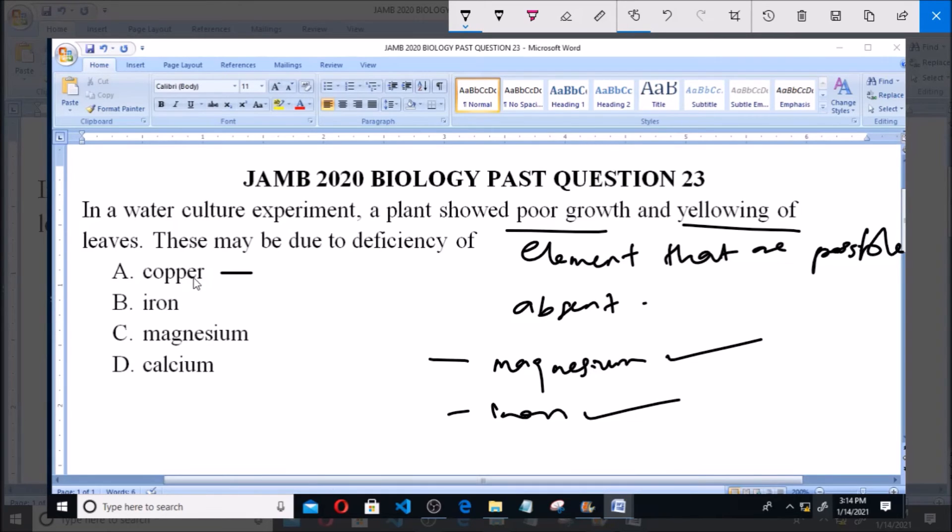But the deficiency of copper and calcium do not result in yellowing of leaves. Although deficiency of copper and calcium initiates poor growth, yellowing of leaves is not seen in the deficiency of copper and calcium.